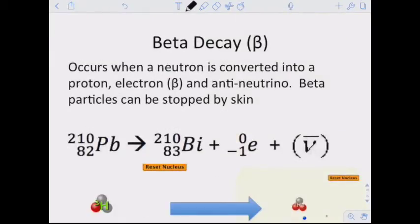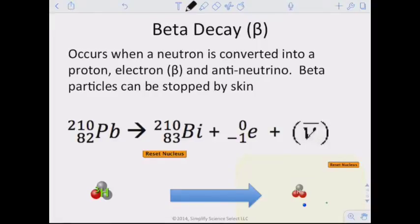Another type of nuclear decay is called beta decay. It occurs when a neutron is converted into a proton, an electron, or an anti-neutrino. A beta particle can be stopped by the skin. What we see here is a very large nucleus and it breaks up into its pieces. We would call this particle right here the beta particle, and we see that it's ejected.